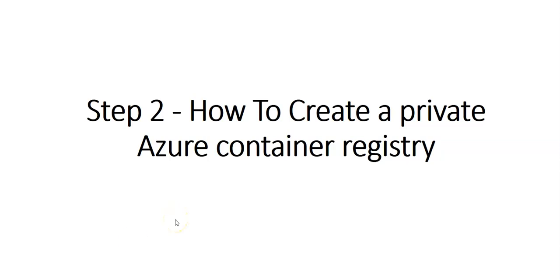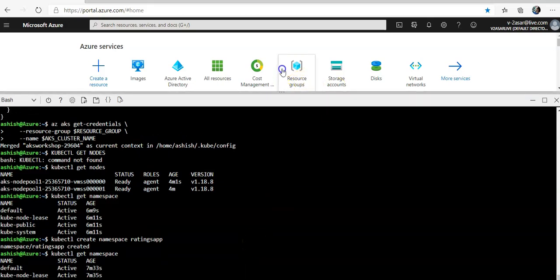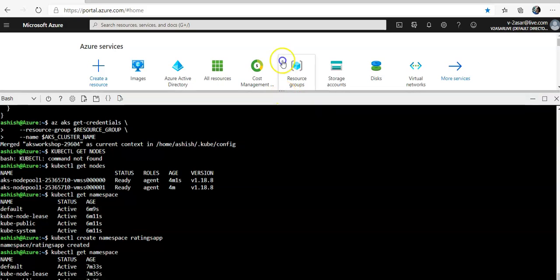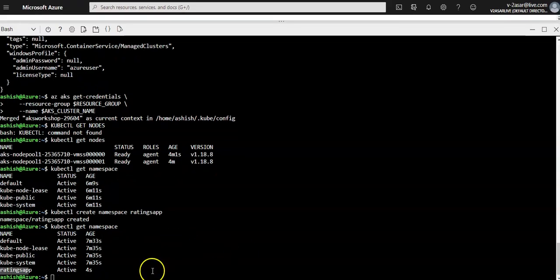Hi, my name is Ashish and in this video it is step two of the Azure Kubernetes workshop. We have covered the introduction; I showed you how to deploy an AKS cluster, connect to it, create a namespace, and see the nodes. In step two, we will create a private Azure Container Registry.